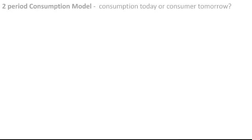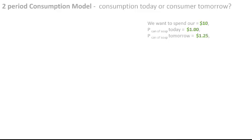Let's take a look at a very simple two-period consumption model. We're looking at consumption today and consumption tomorrow. We've got $10 and we're going to spend it on soup. The price of soup today is $1 and the price of soup tomorrow is $1.25.